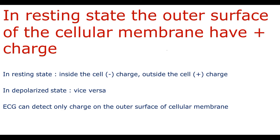The first ECG principle is that in resting state the outer surface of the cell membrane has positive charge. It's probably the most simple and the most important ECG principle. From physiology we know that in resting state cells have negative charge inside the cell and positive charge outside the cell on the outer surface of the cell membrane.